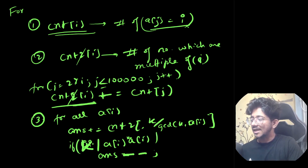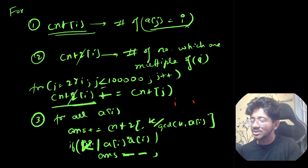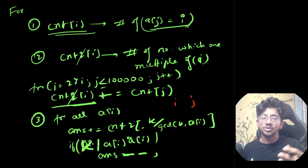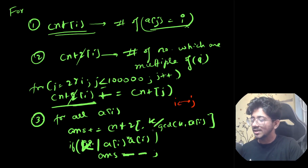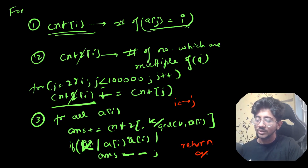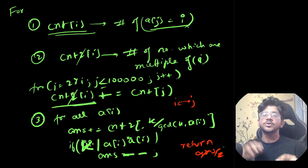There's one final step you'll realize when you test with samples: our procedure counts both (i, j) and (j, i) since there's no ordering imposed. So every valid pair is counted twice. Therefore, at the end, we simply return answer / 2. That's the full formulation — once you have this in mind, you can quickly code it up and submit.